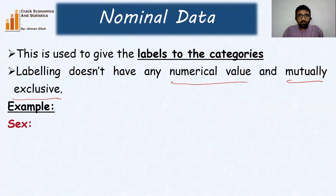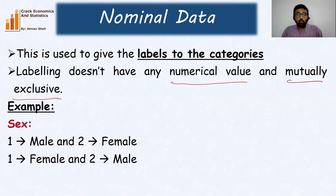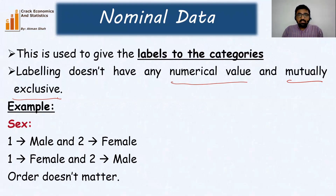Suppose we have the variable sex and we assign one to male and two to female. This variable has two categories: male and female. We assign the numerical value one to male and two to female. But this code does not have any numerical importance — two does not mean it is greater than one. This is just a label, so we can also assign one to female and two to male. Order doesn't matter, and the same code cannot be assigned to two different categories — the codes are mutually exclusive.